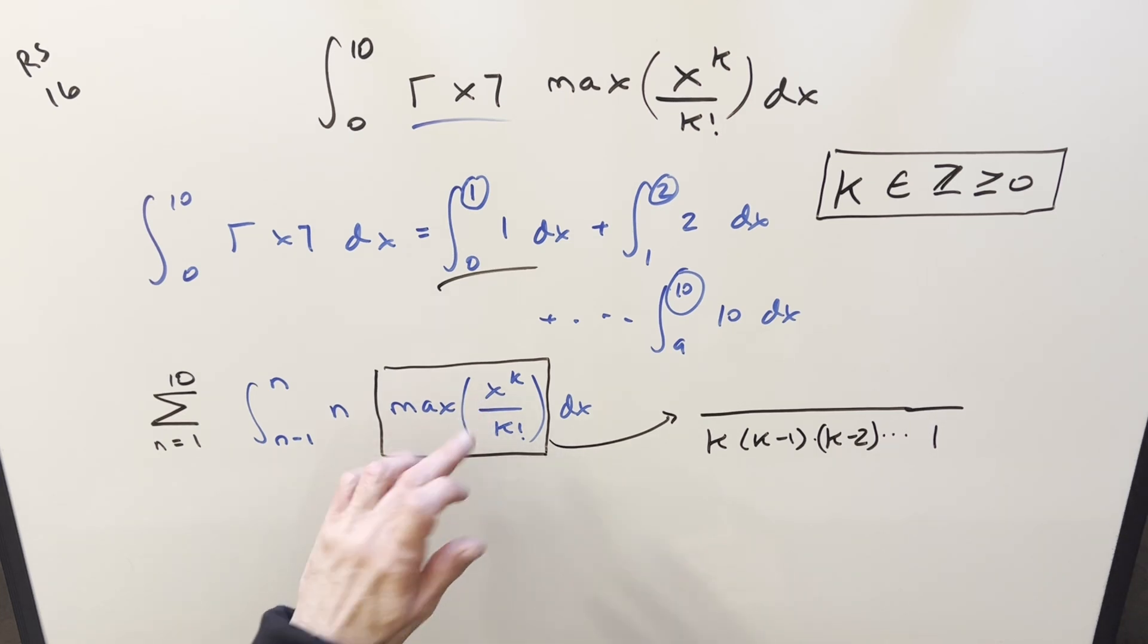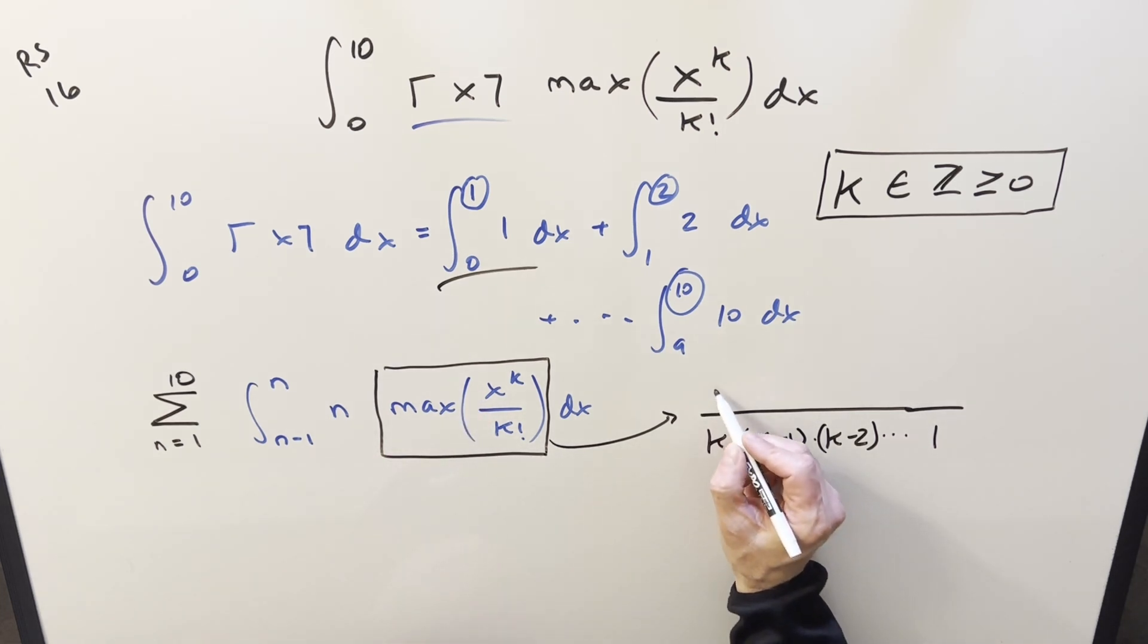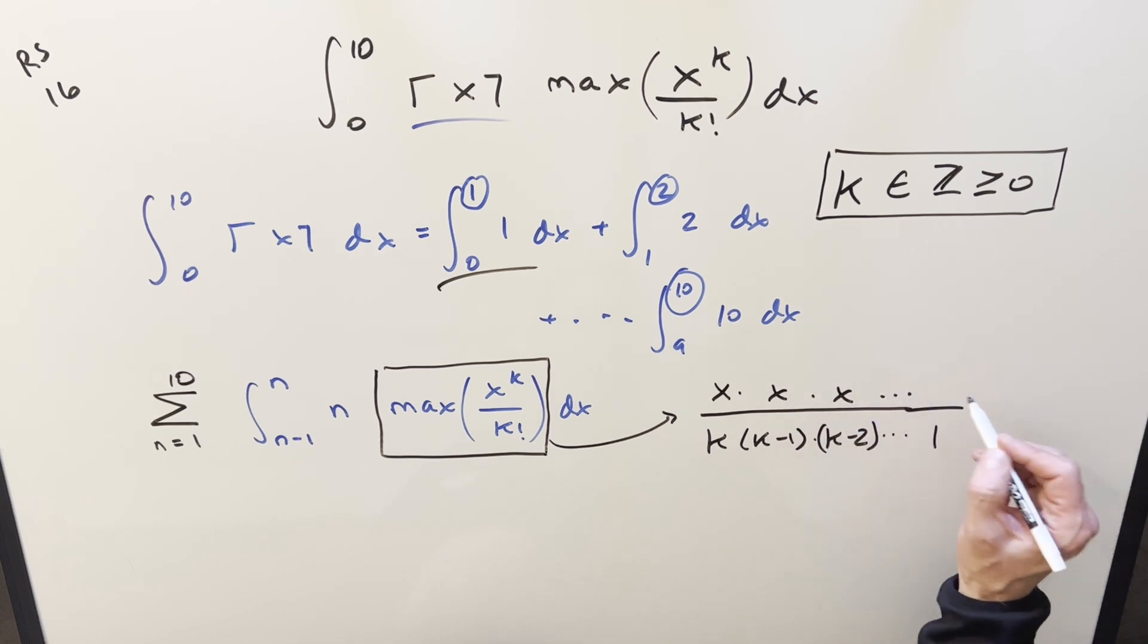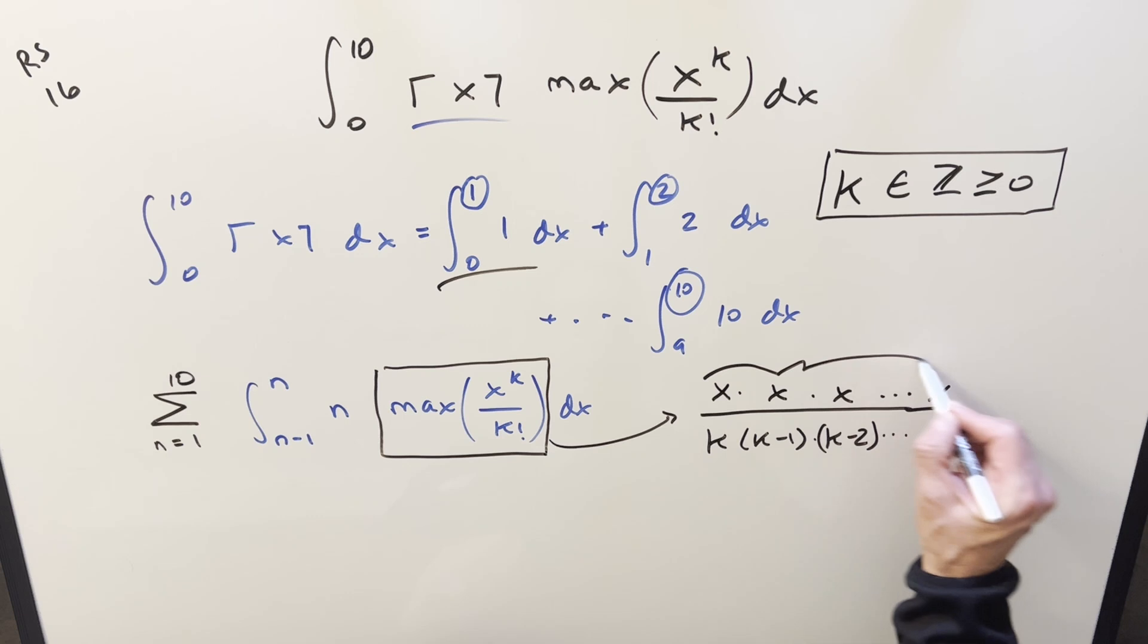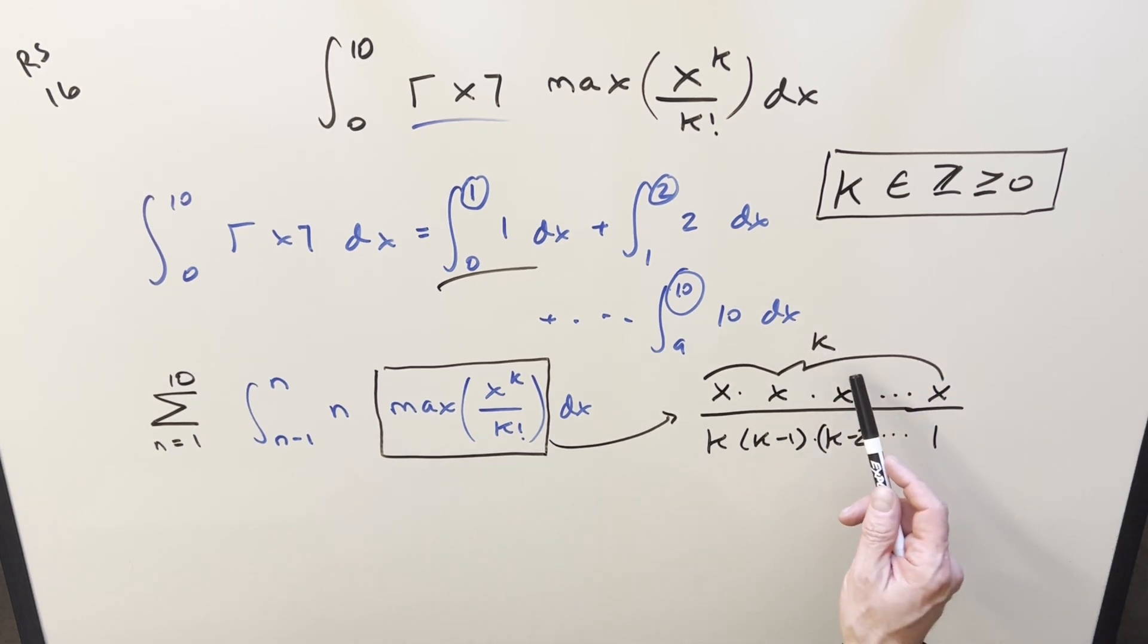And then for x to the k, we can expand that out like multiplication, and I can write it as x times x times x, all the way to an x, where we know we're going to have k x's. So the important thing to notice about it is we actually have the same number of terms in the numerator and the denominator.